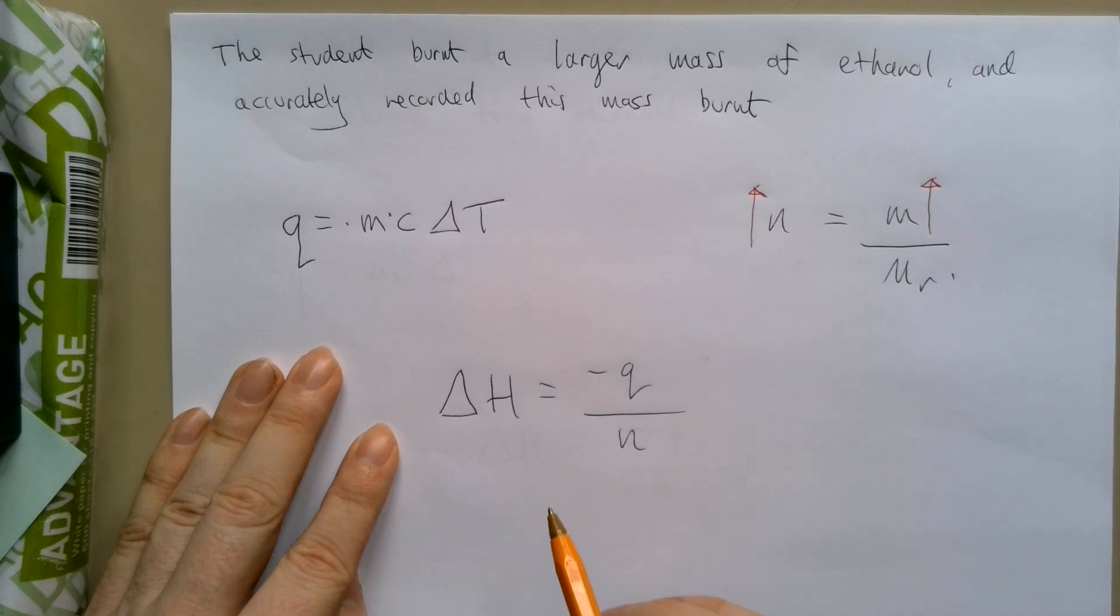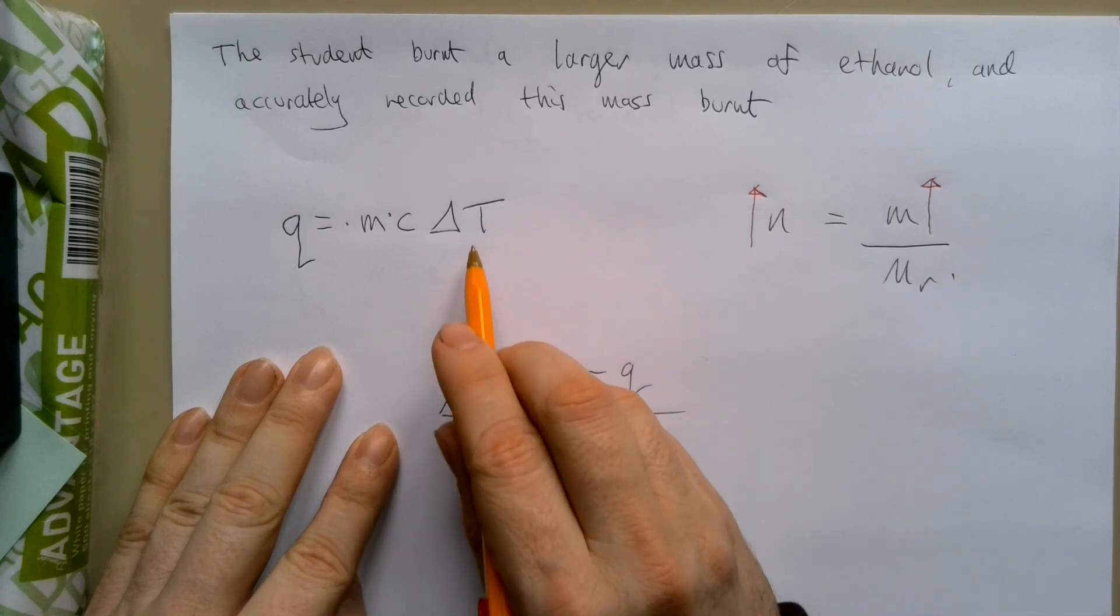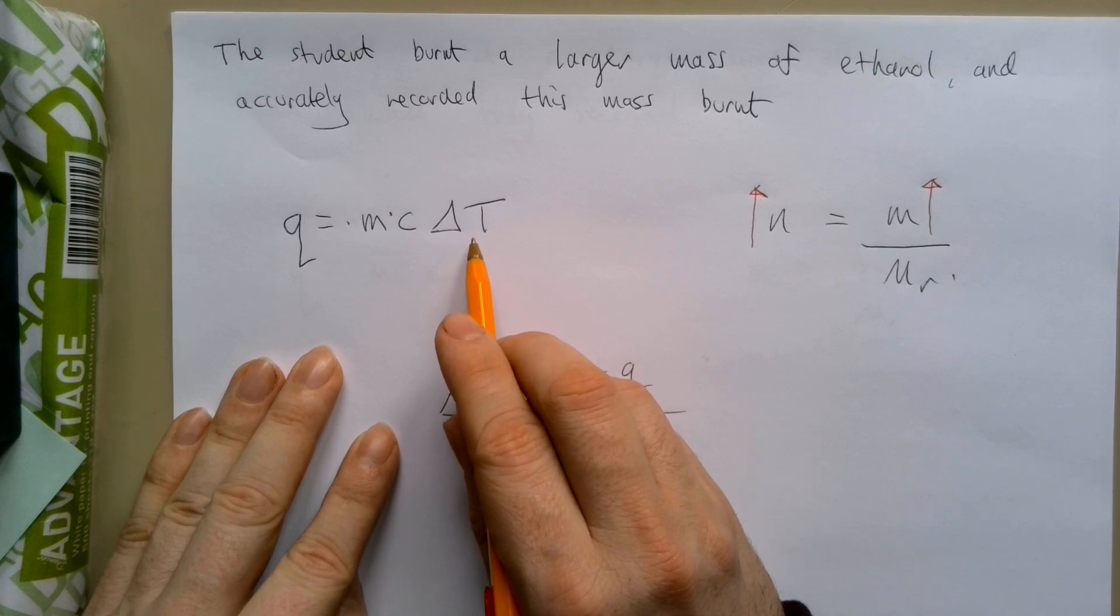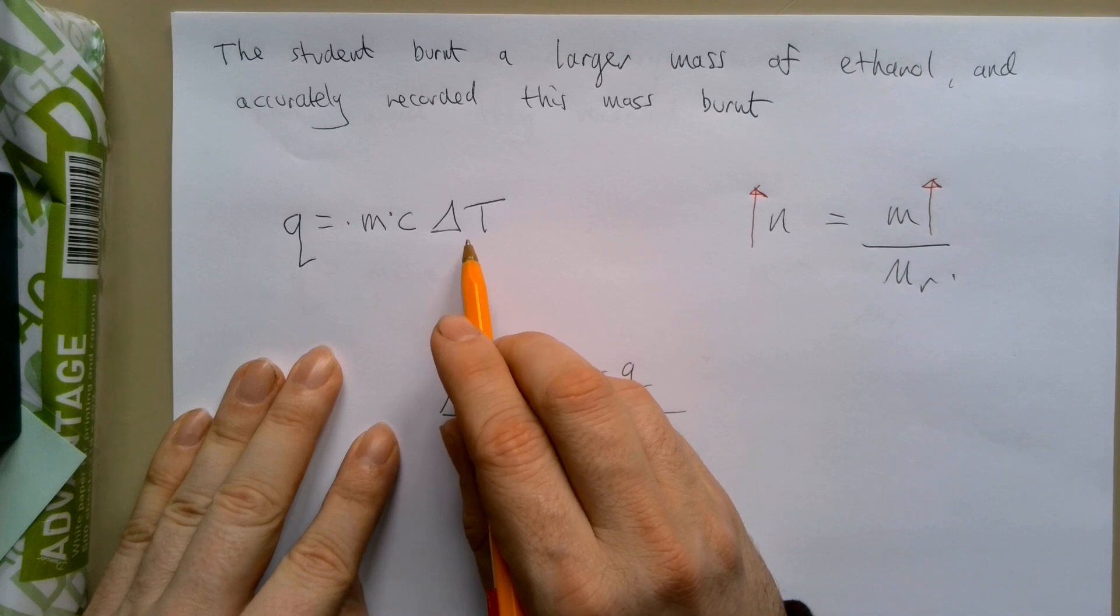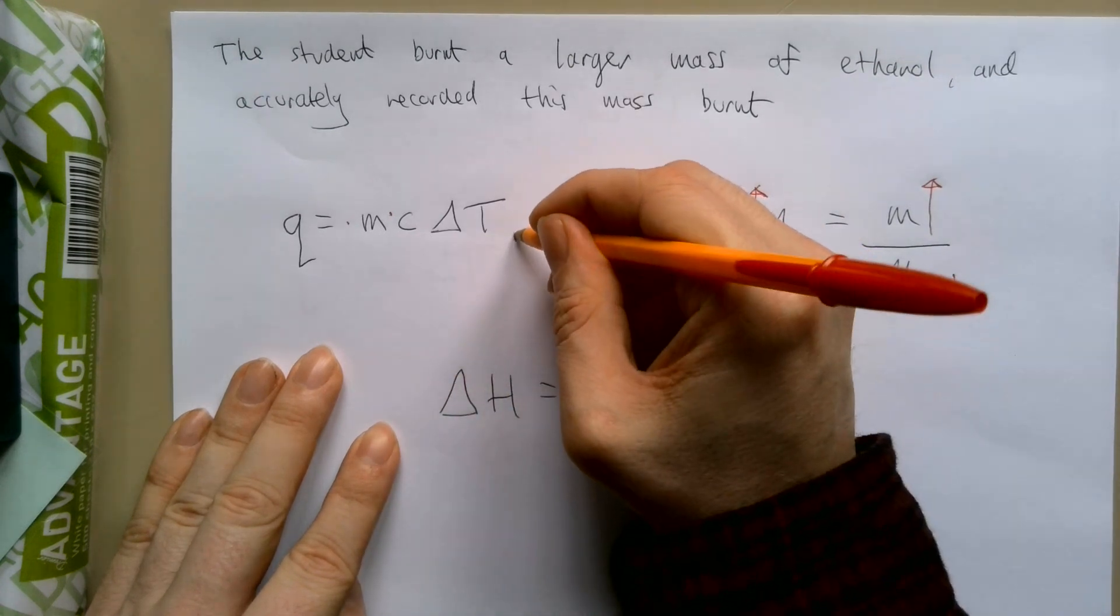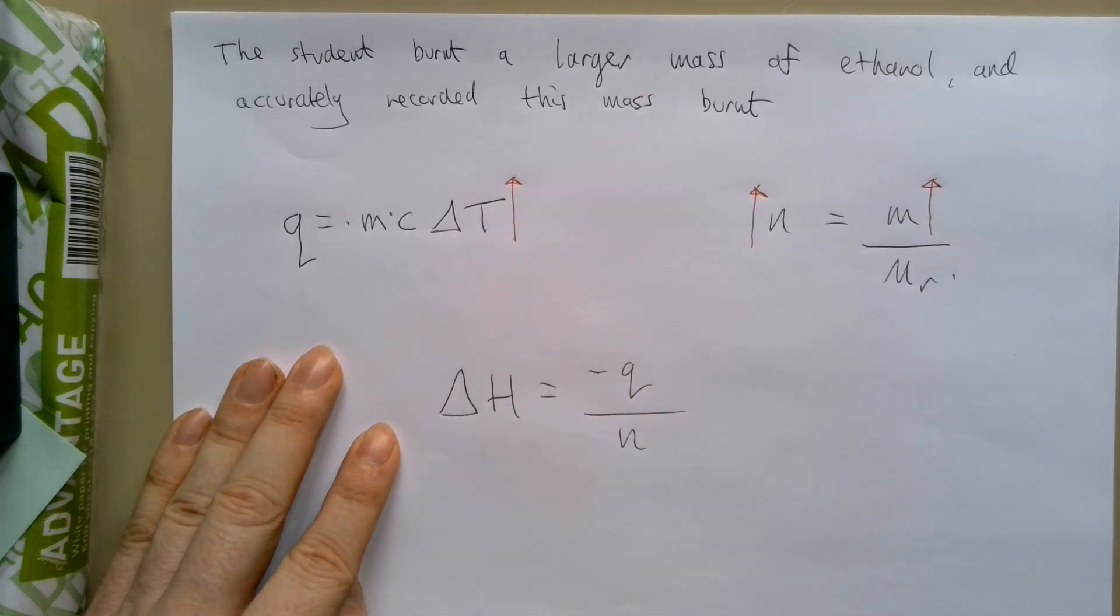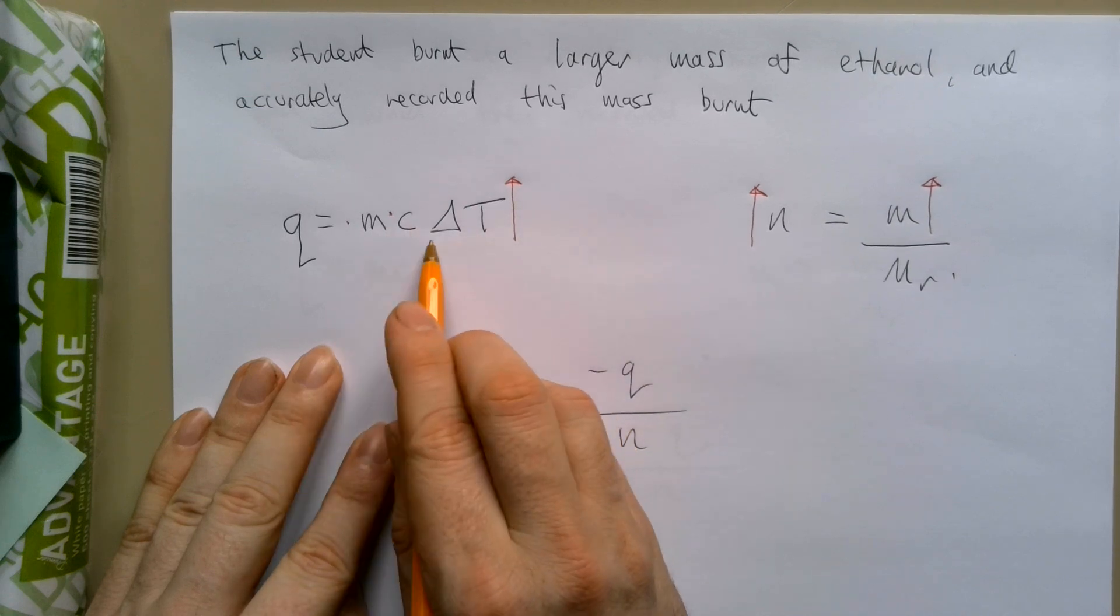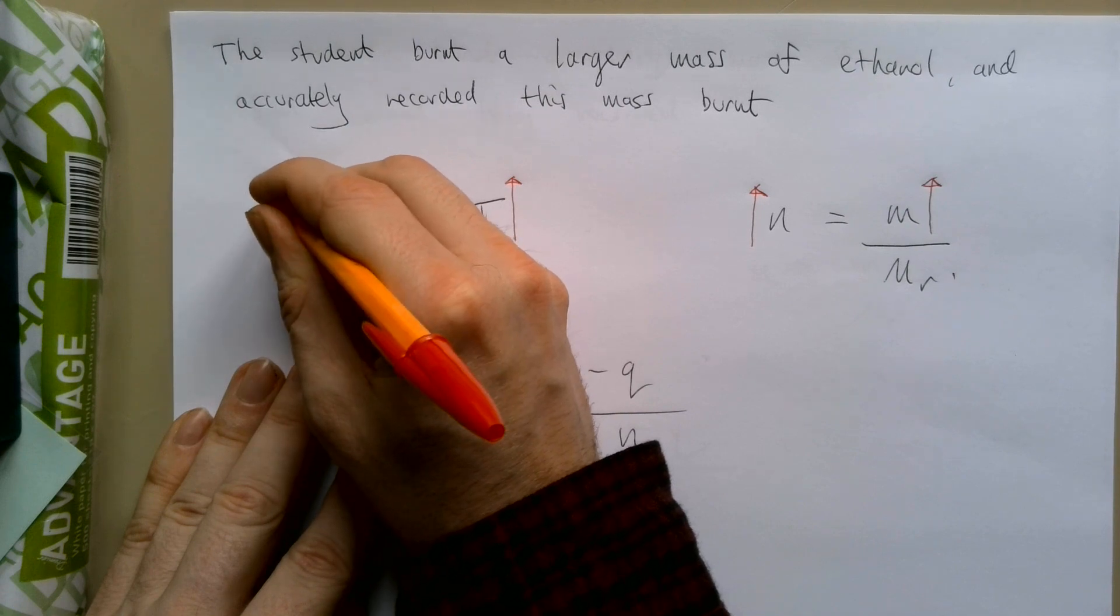However, if we burn a larger mass of ethanol, the temperature is going to increase more, isn't it? If you burn more stuff, you make the temperature go up more. And so our delta T will have increased. So if we're increasing delta T, when we multiply all these together, we will increase the heat.